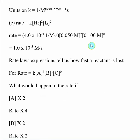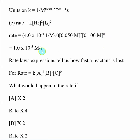Now that we have K, we can find the initial rate at a different set of concentrations — say hydrogen at 0.05 molar and iodine at 0.1 molar. Plugging K and the new concentrations in, raising them to their respective exponents, we get a rate of 1.0×10⁻⁵ molar per second. This illustrates that the units on K must be correct to convert molarity into molar per second.